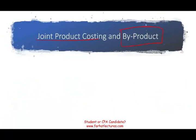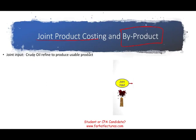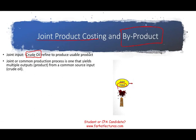So let's start to talk about joint product costing and byproduct. We'll first learn some technical terms, then work an example showing how the computation gets done, starting with the joint input. Joint product costing is when we have an input — some sort of a resource we are using — and it produces many different products. For our purposes, the input is going to be crude oil, which we extract from the ground as a natural resource. That's our joint input, and it's going to incur common production process costs while yielding multiple products from this one common source.